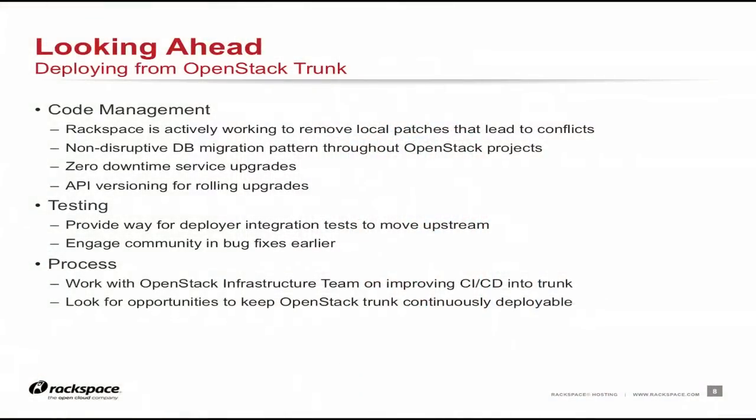There have been some Nova conversations in the design track around zero downtime upgrades. For API versioning, one of our metrics is monitoring when the API drops. We'd like it to be 100% — that's our goal. When you upgrade the API node and restart it, availability drops. API versioning is a path forward that allows us to roll through an upgrade without ever having the API go down completely.